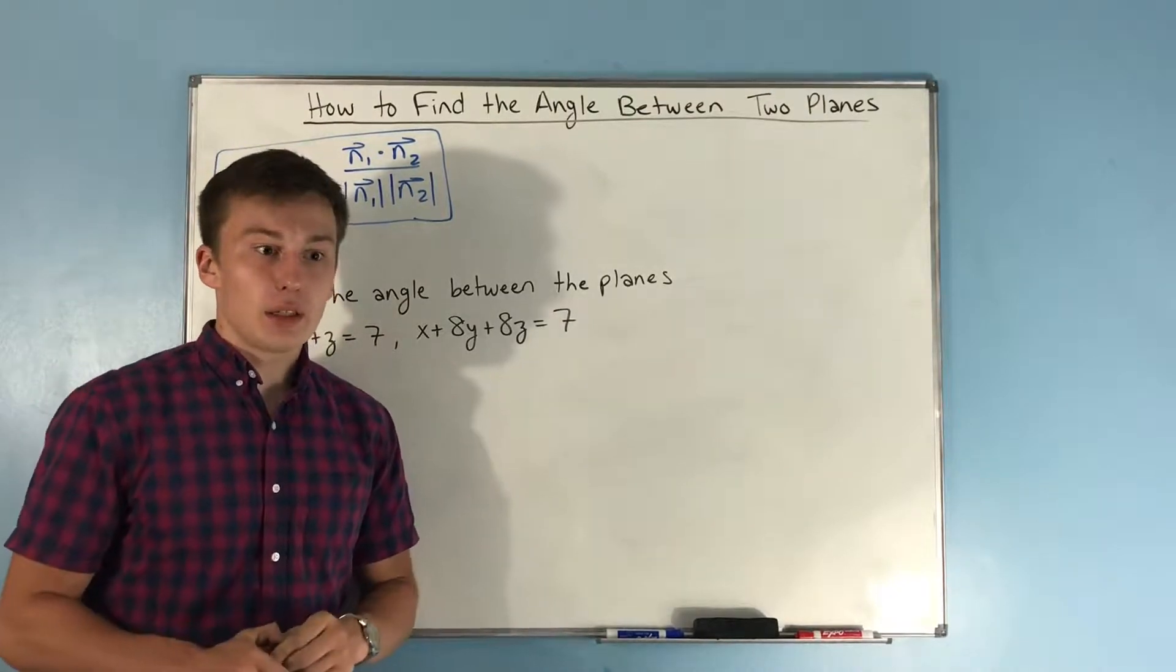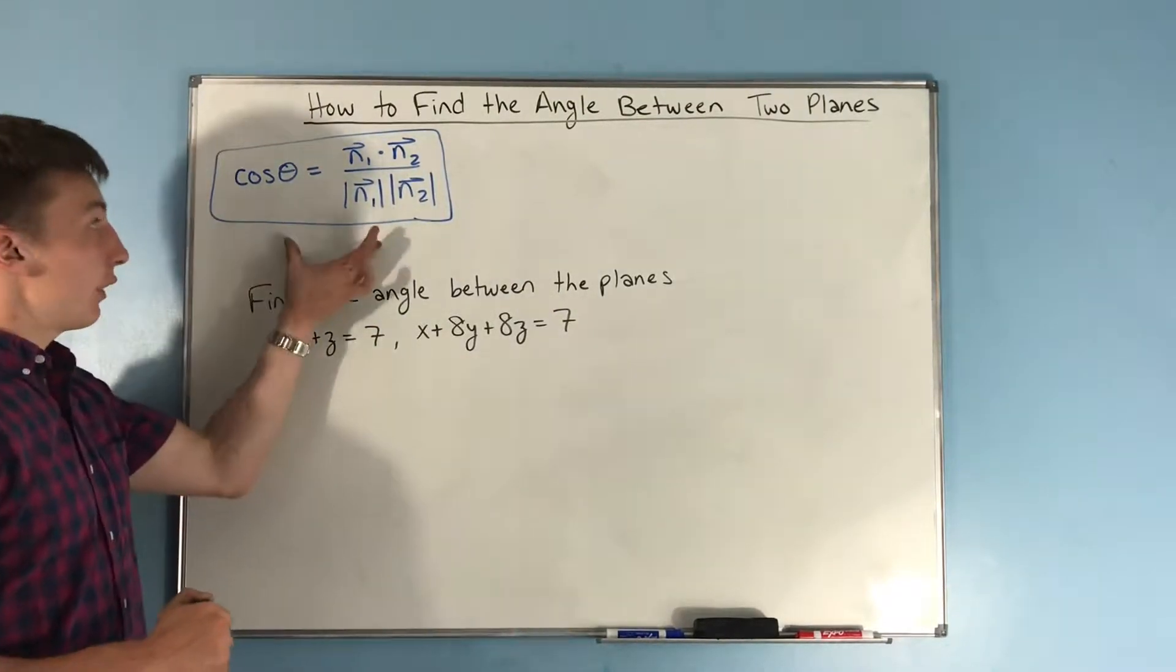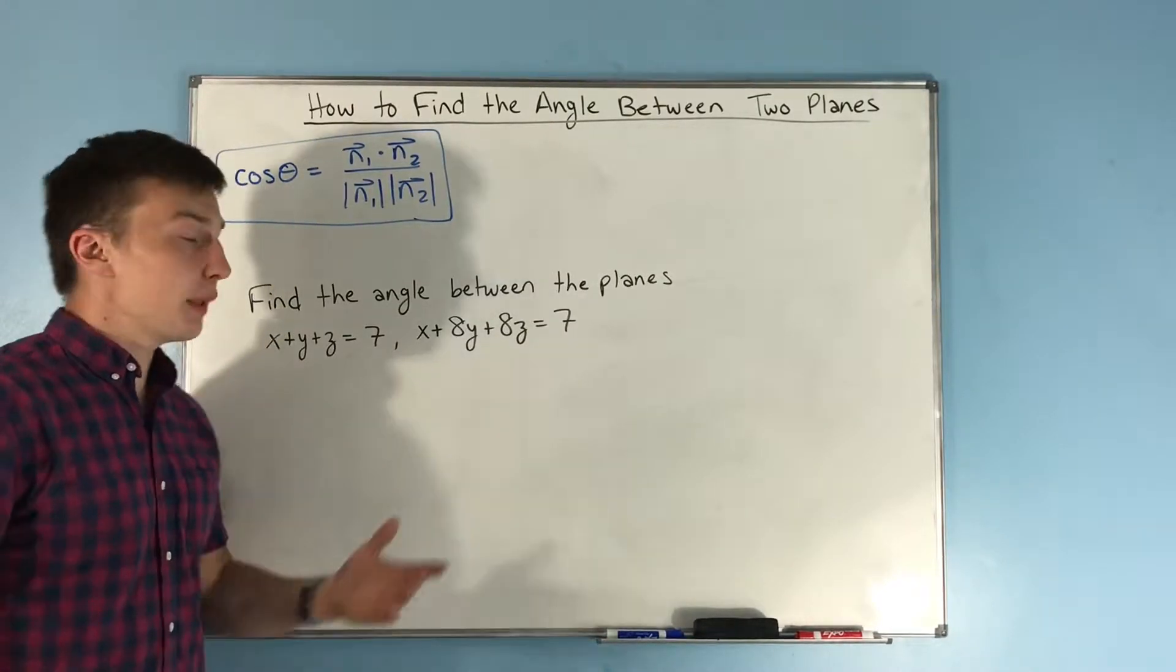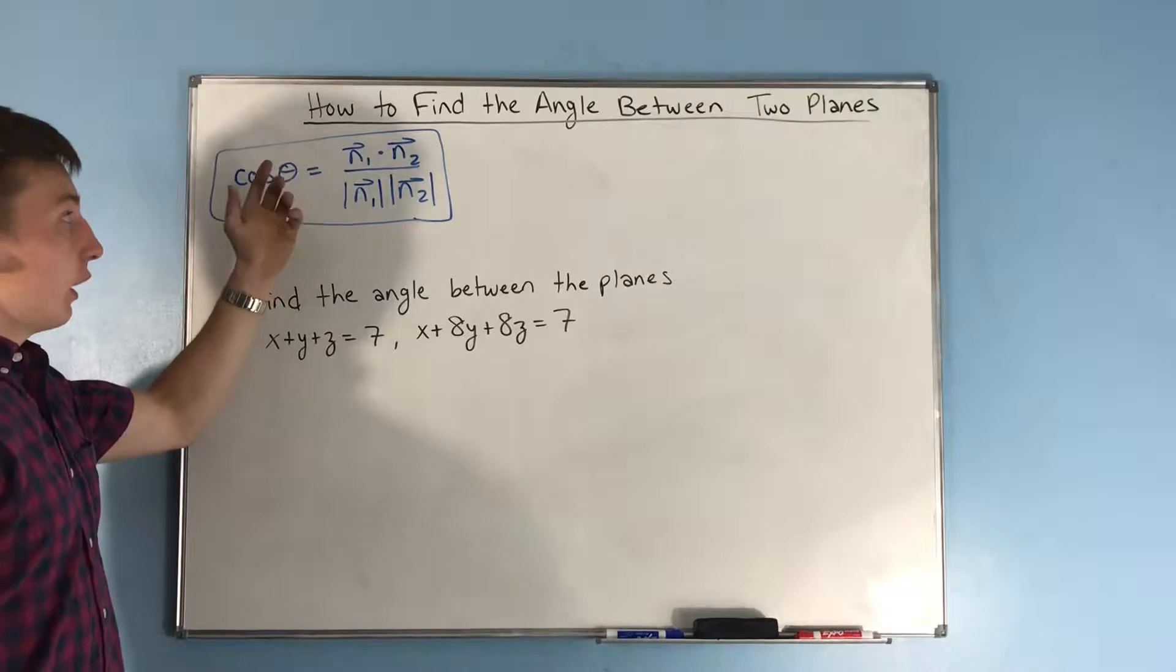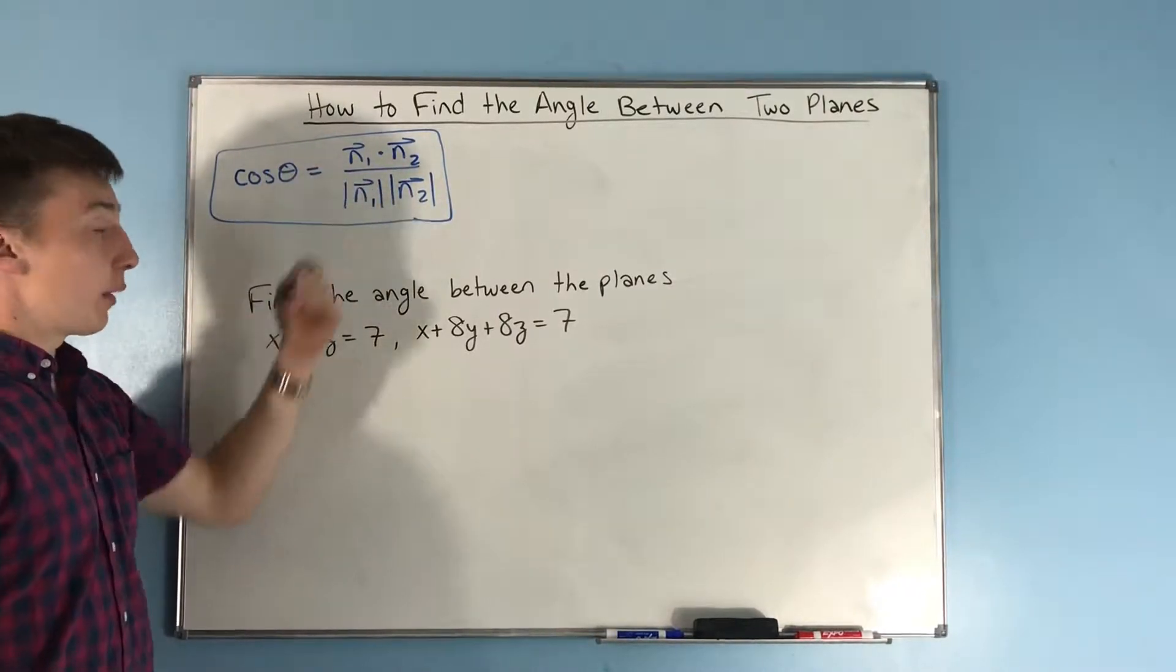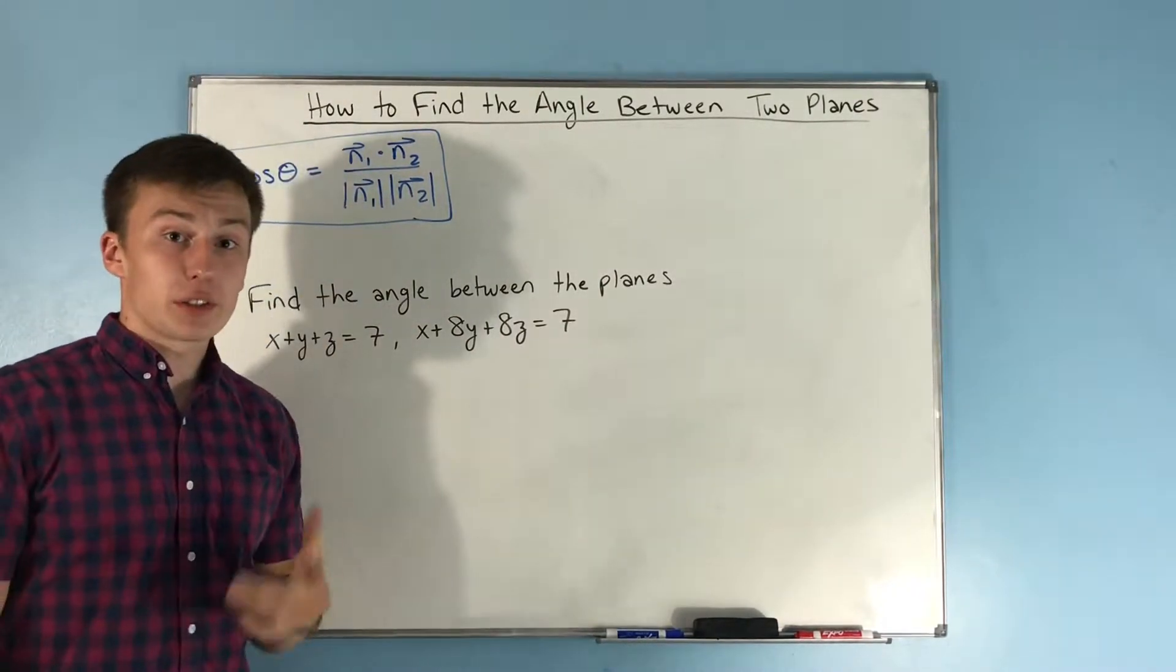Now, this is actually something that you have a nice easy formula for, and this makes sense because we've done work with this. Cosine theta equals the dot product of two vectors over the magnitude of both those vectors multiplied together.